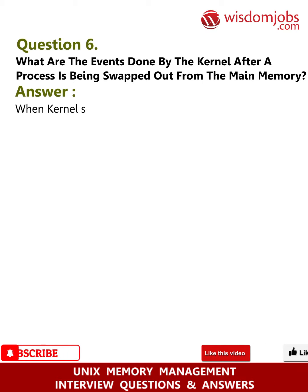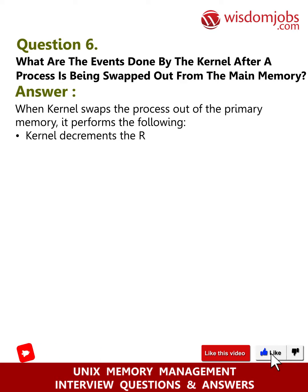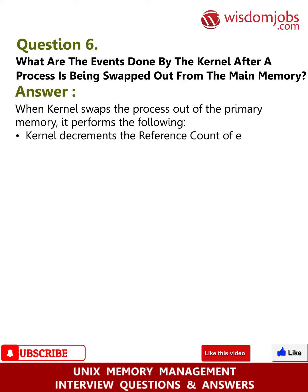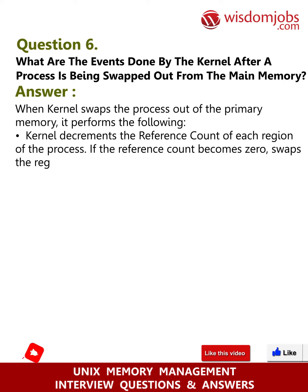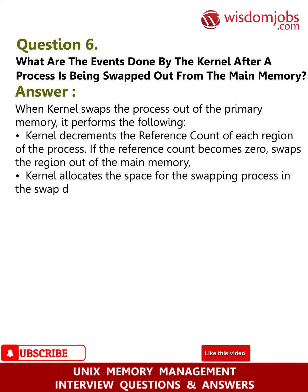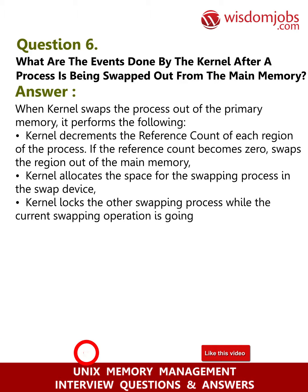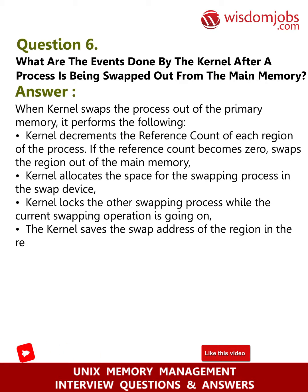Question 6: What are the events performed by the kernel after a process is swapped out from main memory? Answer: When the kernel swaps a process out of primary memory, it performs the following: decrements the reference count of each region of the process; if the reference count becomes zero, swaps the region out of main memory; allocates space for the swapping process in the swap device; locks other swapping processes while the current swap operation is ongoing; and saves the swap address of the region in the region table.